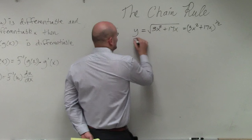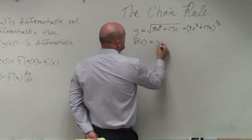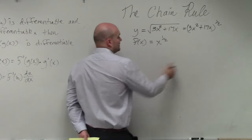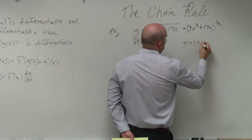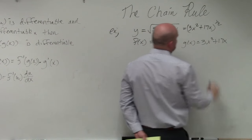Therefore, I can identify my outside function is going to be x to the 1 half. My g of x function is going to be 3x squared plus 17x.